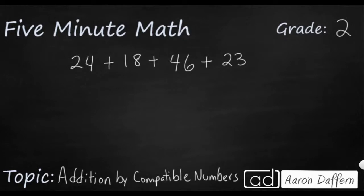So we have four numbers on the screen: 24 plus 18 plus 46 plus 23. And we're going to look at how we can use this term down here, compatible numbers, to add these numbers mentally. Now compatible numbers are simply numbers that easily add together.